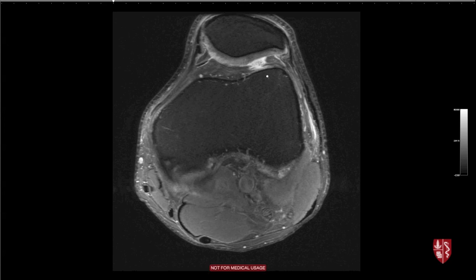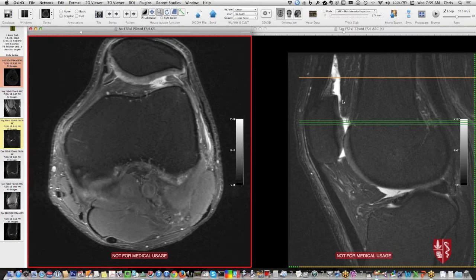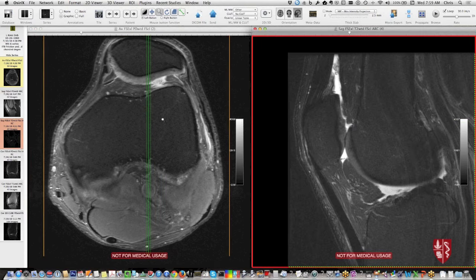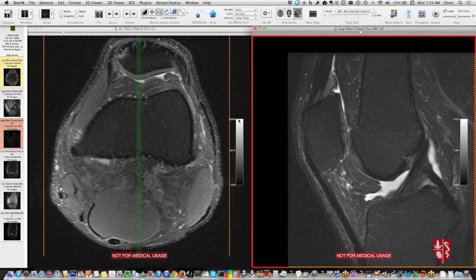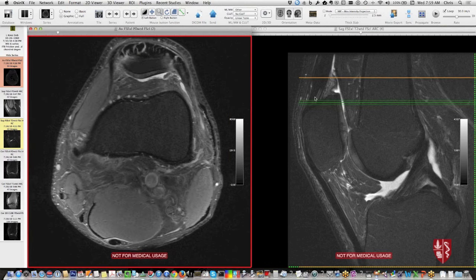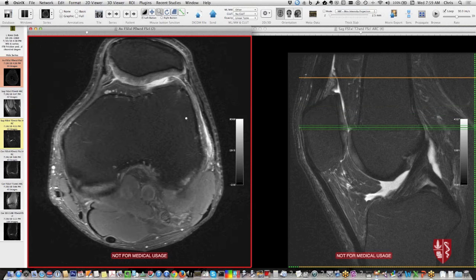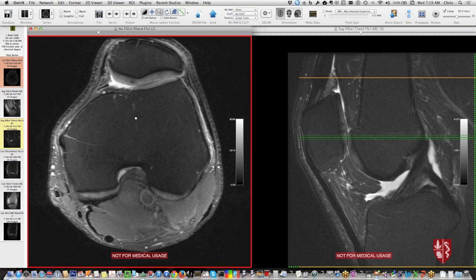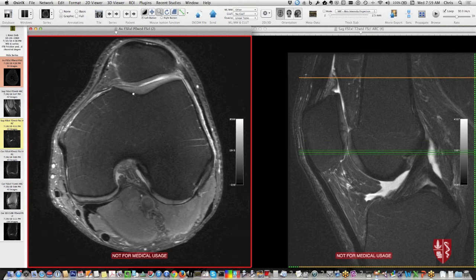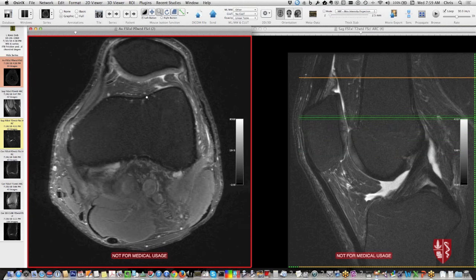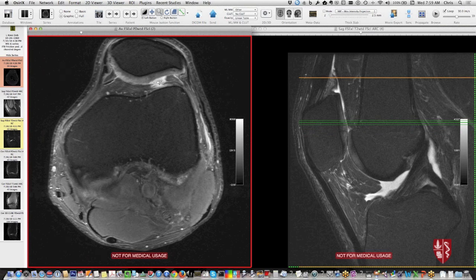An important pitfall on axial patellofemoral cartilage assessment is being too high. If you're at the upper patella level, what appears in front of the femur is pre-femoral fat, not trochlear cartilage. On fat-suppressed sequences that fat is low signal. You don't reach the trochlear cartilage until you go further down. You want to find the gray homogeneous tissue that is the true articular cartilage — a common error is calling a cartilage defect in the trochlea when it's actually just the pre-femoral fat.